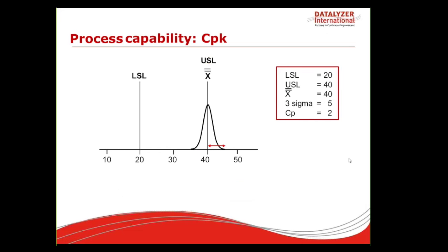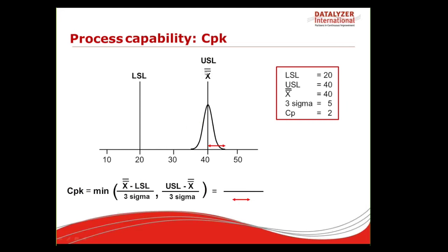Here is a slightly more extreme example. The USL is the most critical limit, and USL minus X-bar = 40 minus 40 = 0. So we have 0 divided by 5, giving a CPK value of 0. A CPK of 0 means 50% is out of specification. The CP value is 2, so the variation is perfect, but the location is wrong. From the combination of CPK and CP, we can tell that variation is acceptable but location is not. If the location were exactly in the middle, CPK would also be 2.